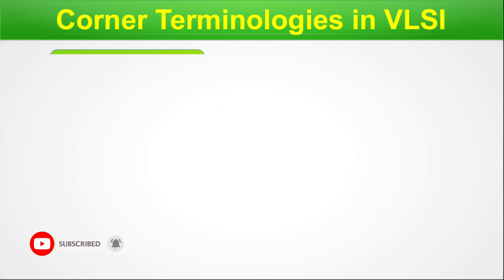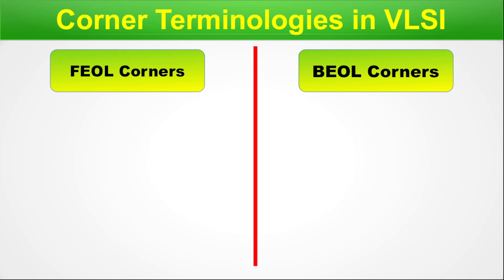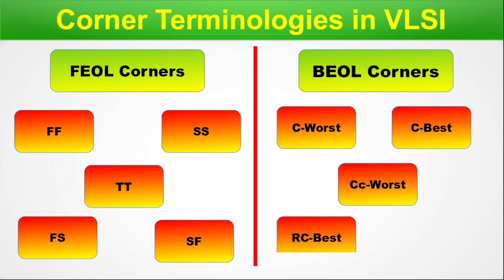There are two corner terminologies in VLSI: FEOL corners and BEOL corners. FEOL corners are FF, SS, TT, FS, and SF — as shown in the previous graphics. BEOL corners are C-best, C-worst, RC-best, RC-worst, and RC-typical — these have been discussed in the RC corners episode. The FEOL corners are process corners, and BEOL corners are the RC corners.